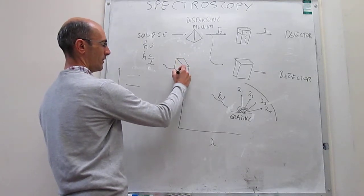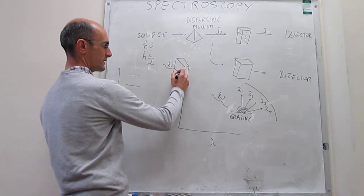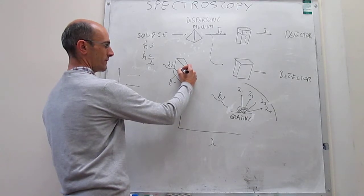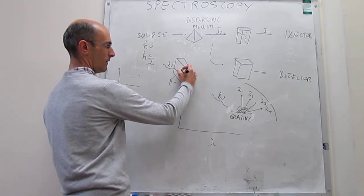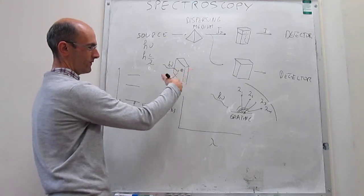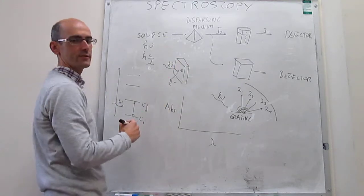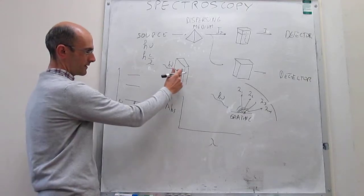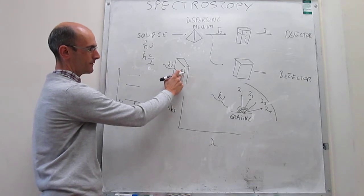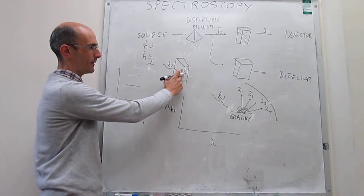So photons come in of a particular wavelength, and what they will do is eject an electron. And what that does is it generates a positive hole here in the material. Because the original charge is neutral, if there's an electron being removed from that photodiode, then there will be a positive hole left behind.